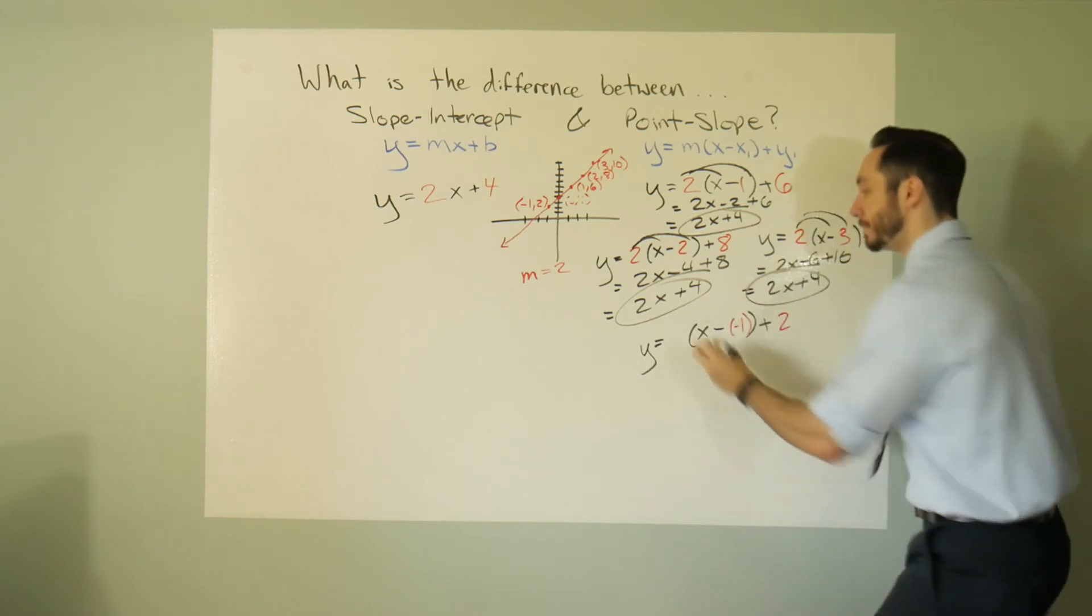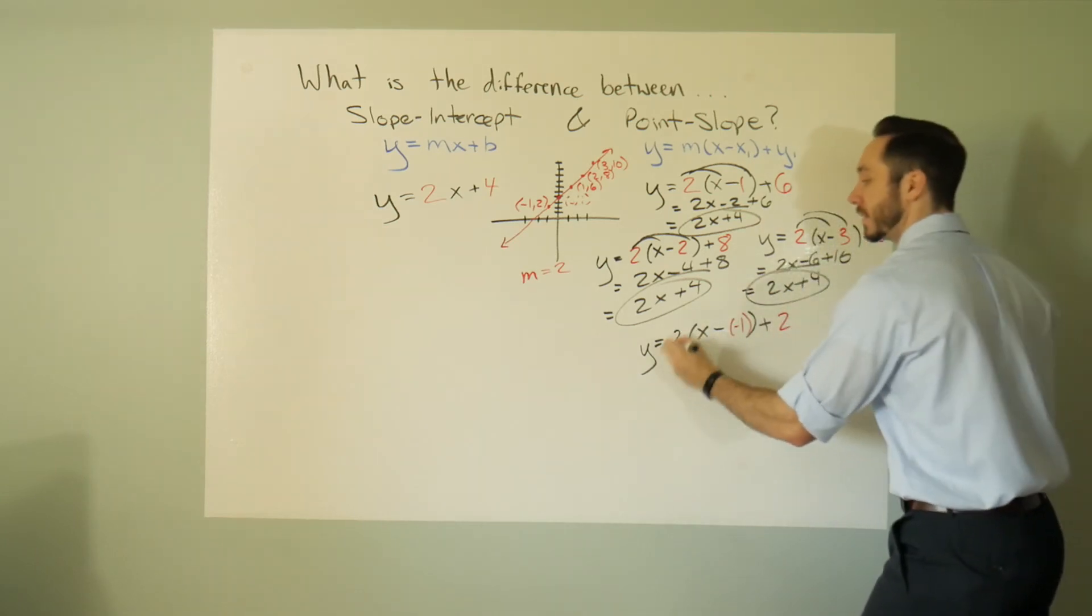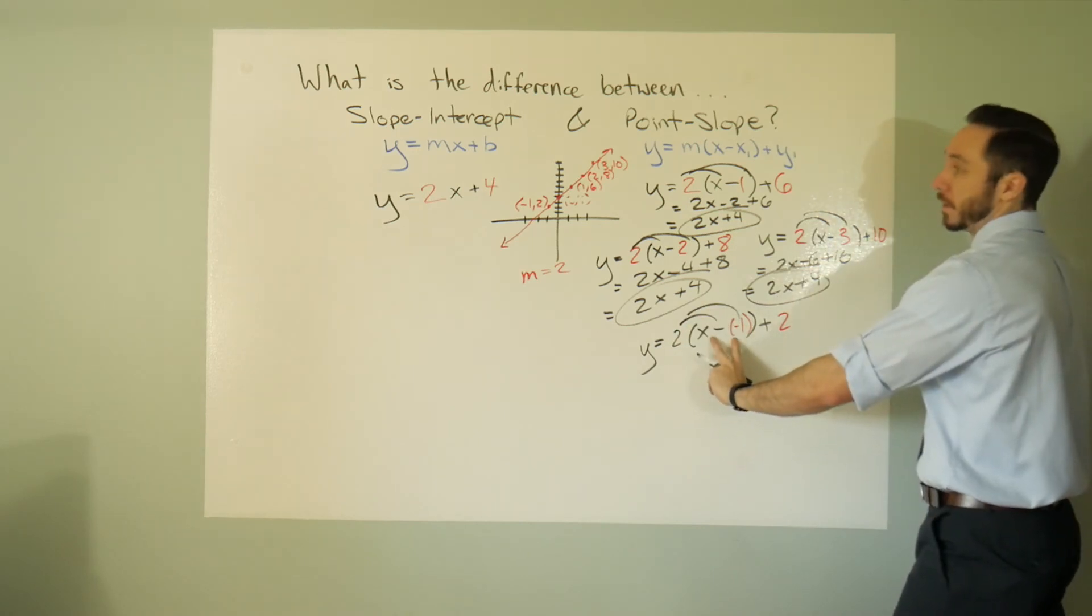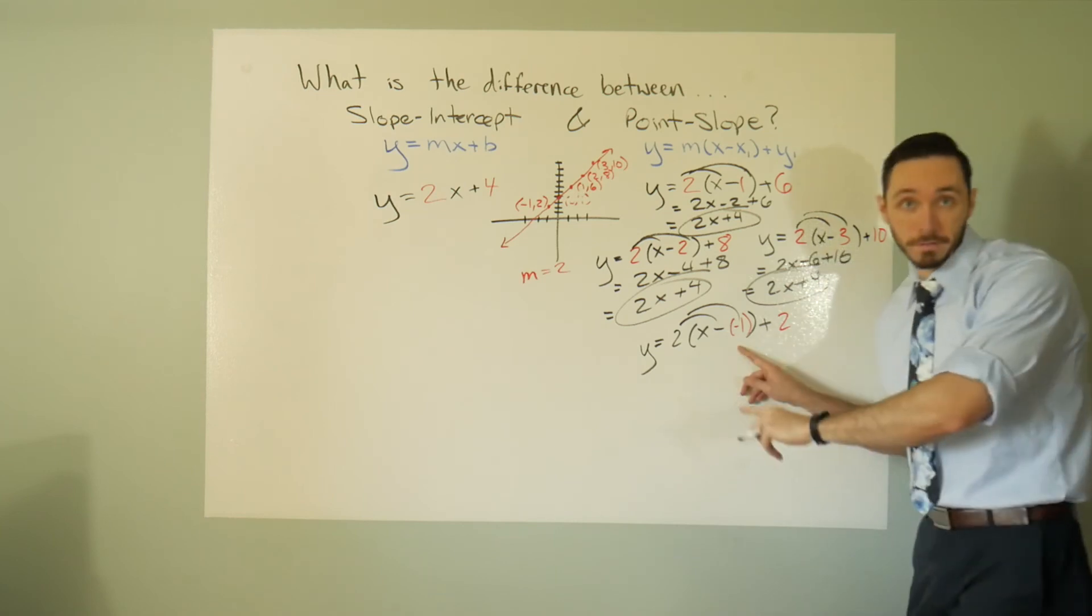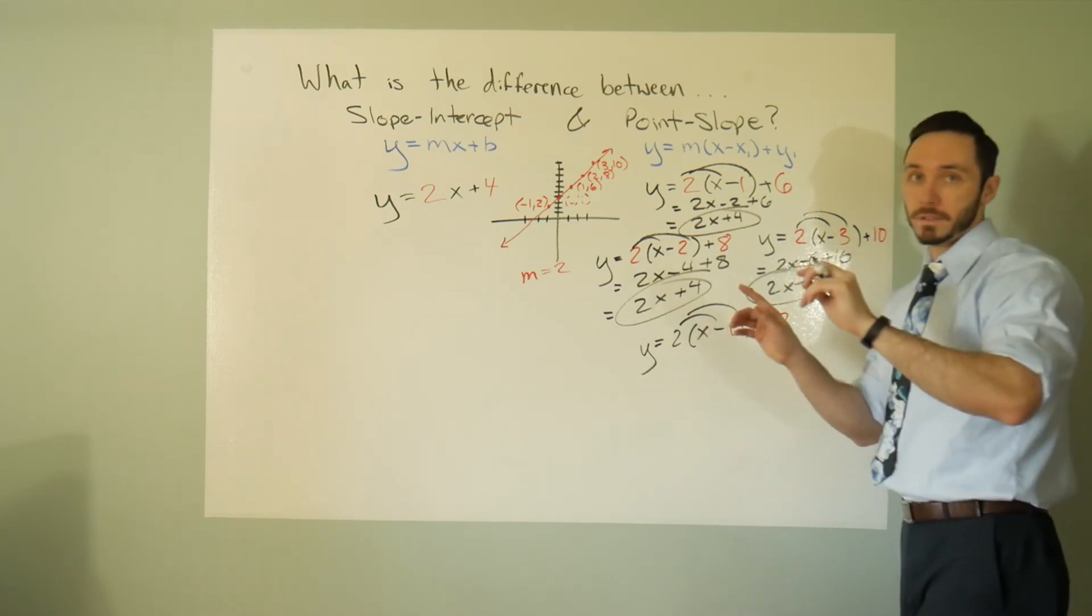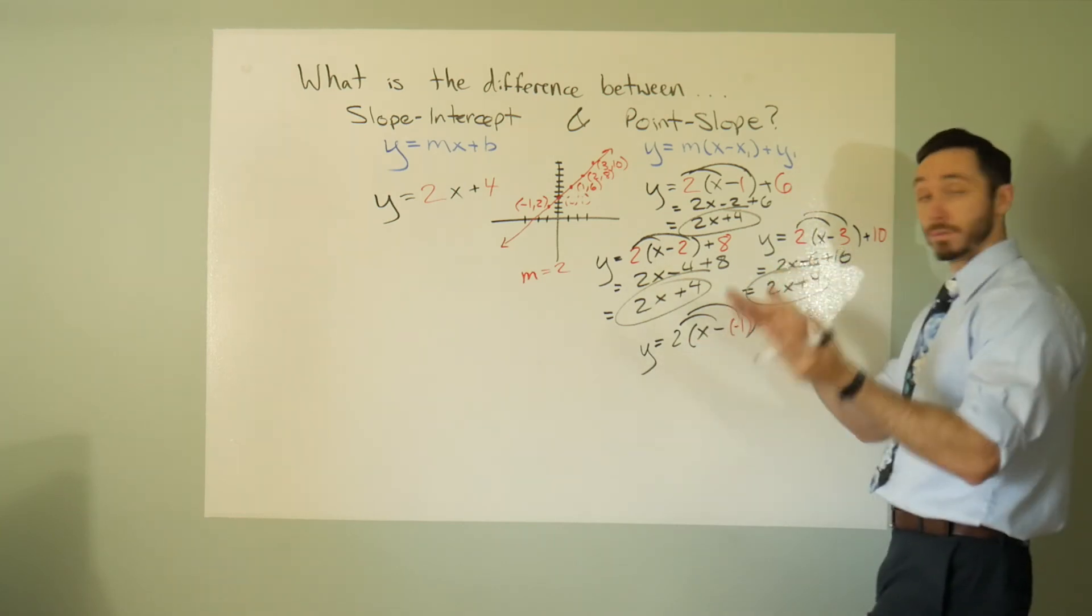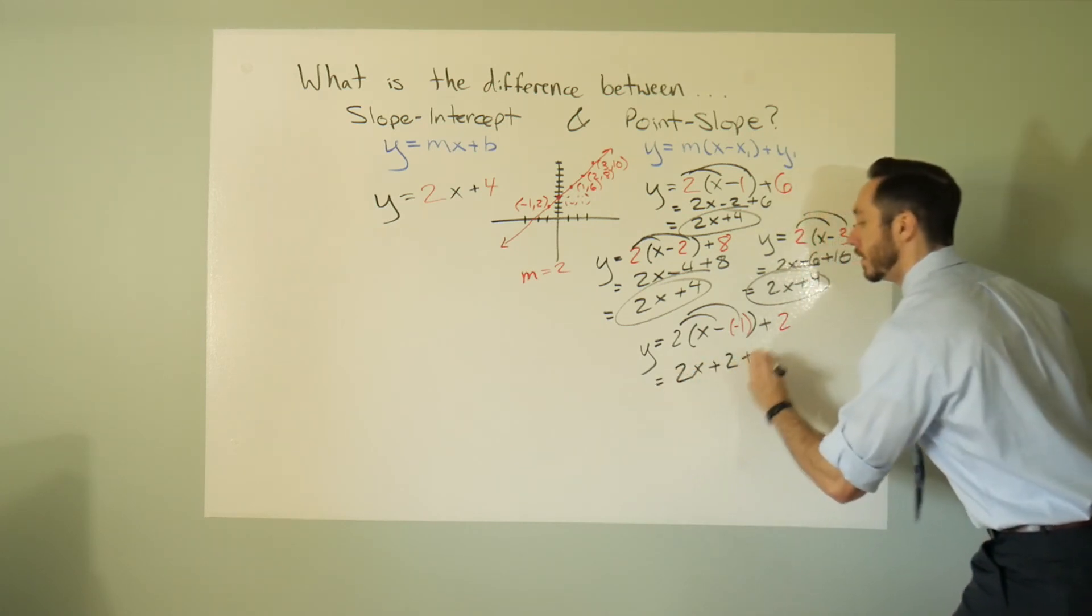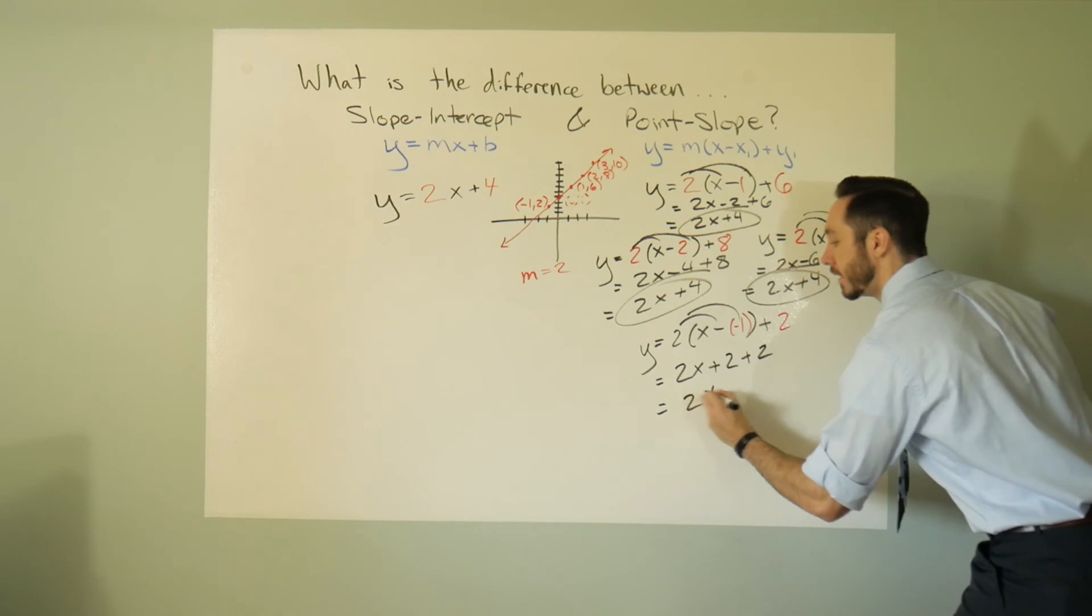Same thing. Distribute in this 2: 2x minus 6 plus 10, that's 2x plus 4. Are you tired yet? Oh, I forgot this 2. Yikes, there's a 2 there. Distribute in this 2 - something small worth noting: you're subtracting off a negative, so it's the same thing as a positive. Right? So it would be 2 times quantity x plus 1 plus 2, which is 2x plus 2 plus 2. Hey, it's the same thing!